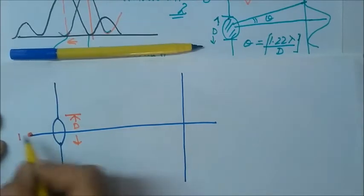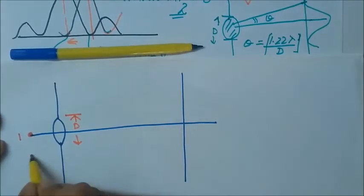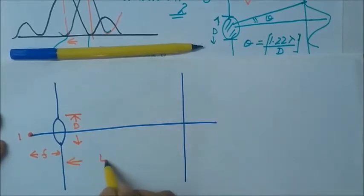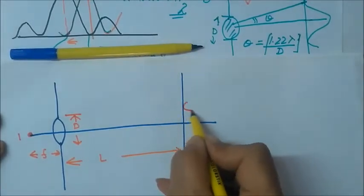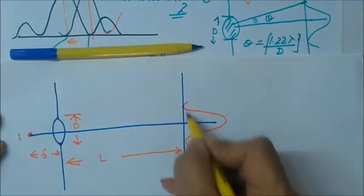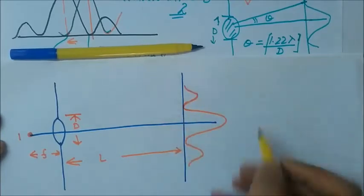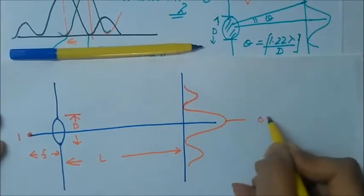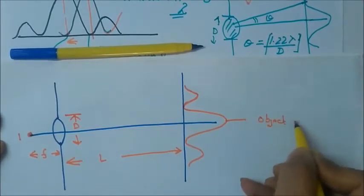This is object 1, at focal length. Let this distance be L where the image is formed, and let this be the central maxima and first minima of the image by object 1.